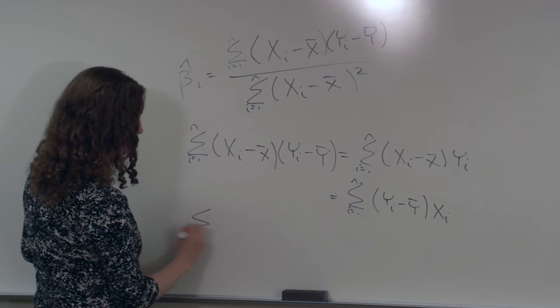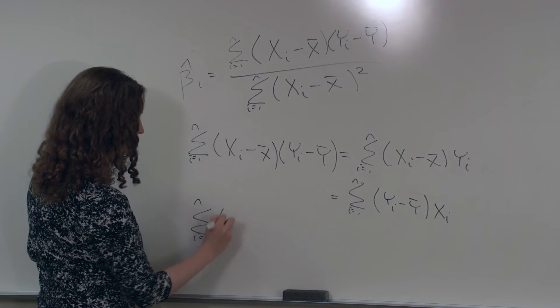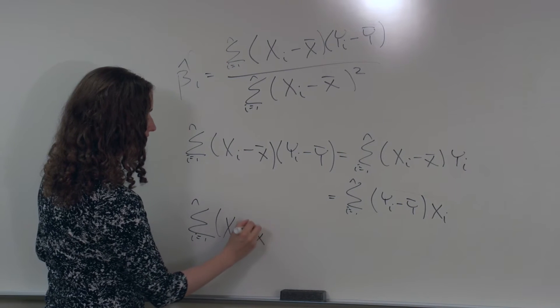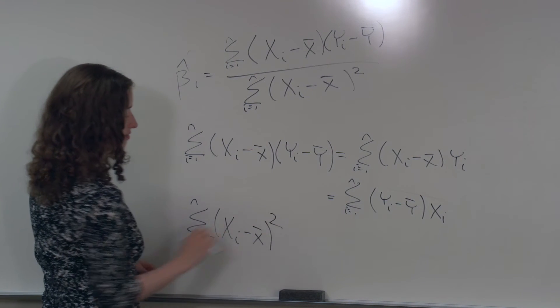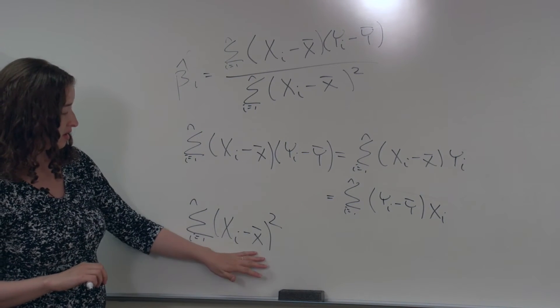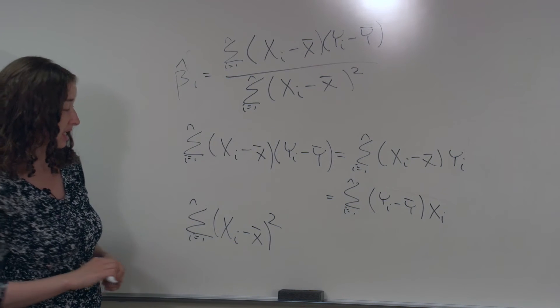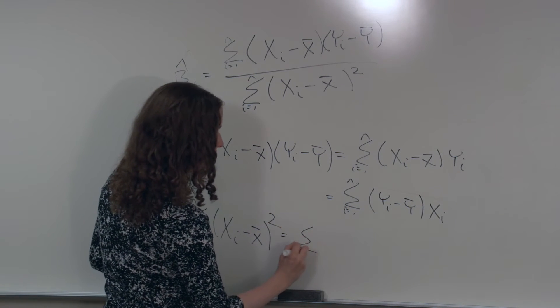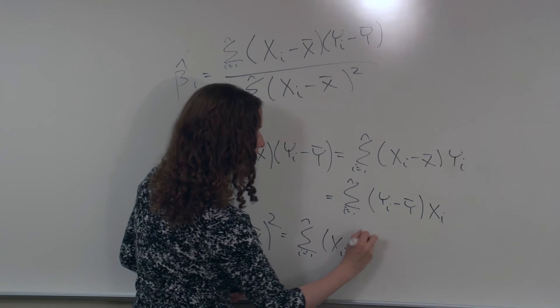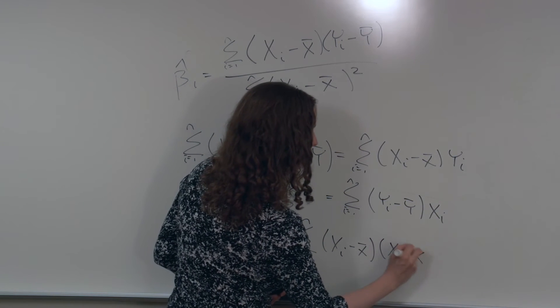Similarly, we can do something parallel to the denominator of the slope coefficient estimate. The sum of xi minus x bar squared, of course, is the same as the sum of xi minus x bar times xi minus x bar.